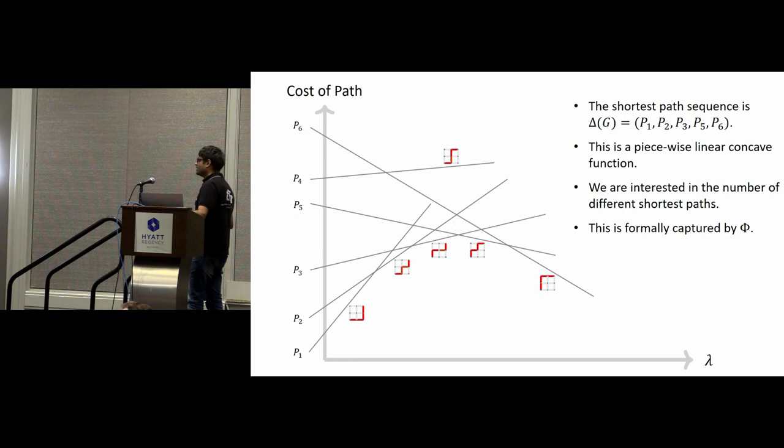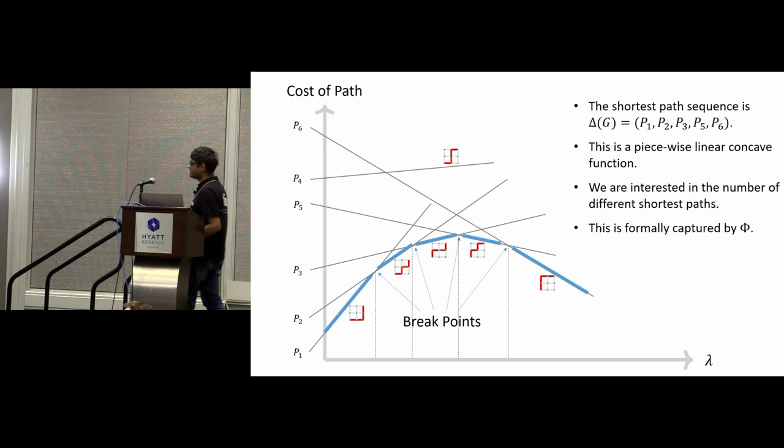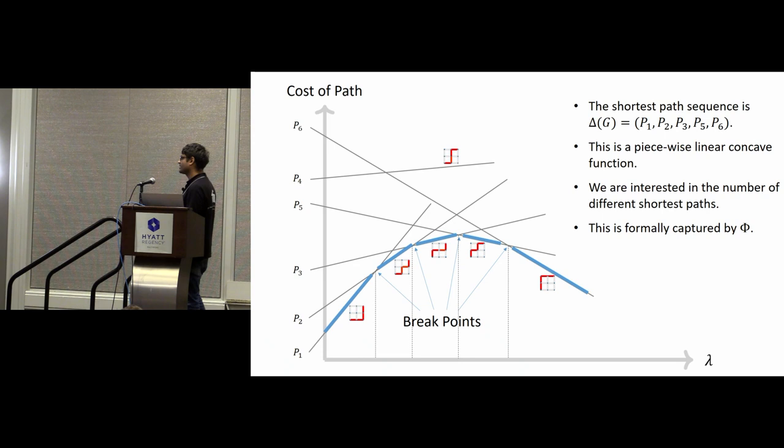The important thing to note is that, beyond that point, P1 can never be a shortest path. Because these are basically just straight lines, they intersect at one point, and once P2 becomes shorter, it continues to be shorter, for all higher values of lambda. This point will be important later on. So now, this is P3, P4, P5, P6. And we can visualize the entire shortest path as a sequence. Look at the lower envelope of this whole graph. And in general, this will always be a piecewise linear concave function. So in this case, this piecewise linear concave function has five pieces, because five of the paths are part of shortest path. And the sixth path, if you notice, the one at the top, P4 over there, that is never a shortest path.